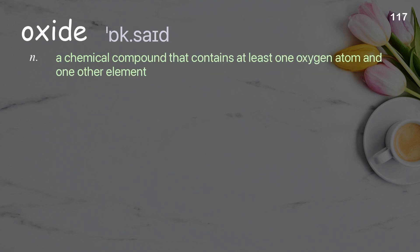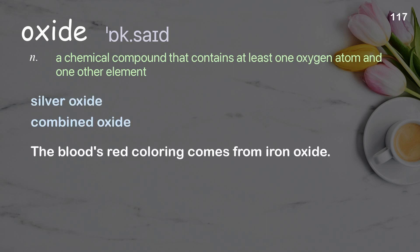Oxide: a chemical compound that contains at least one oxygen atom and one other element. Examples: silver oxide, combined oxide. The blood's red coloring comes from iron oxide.